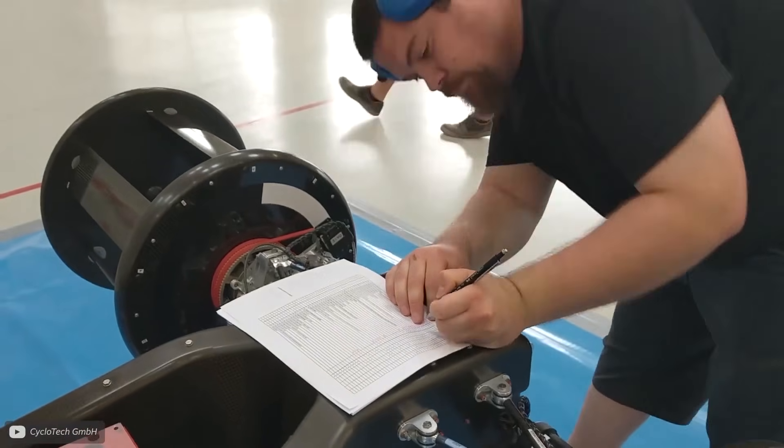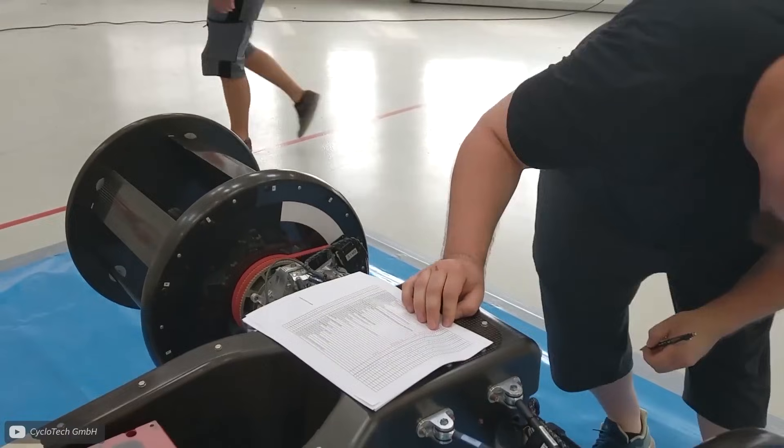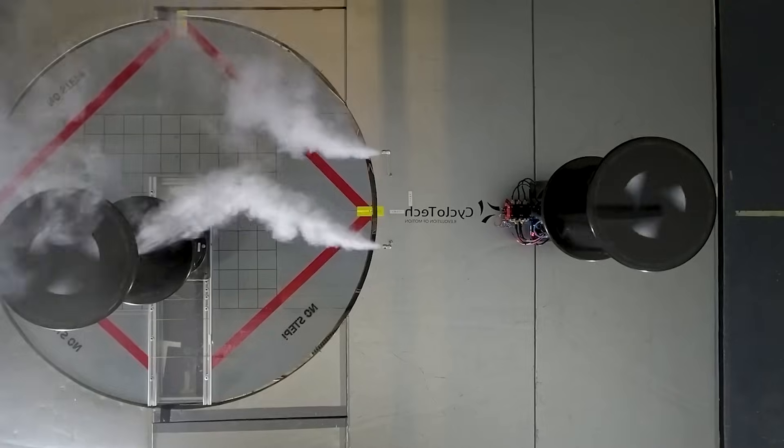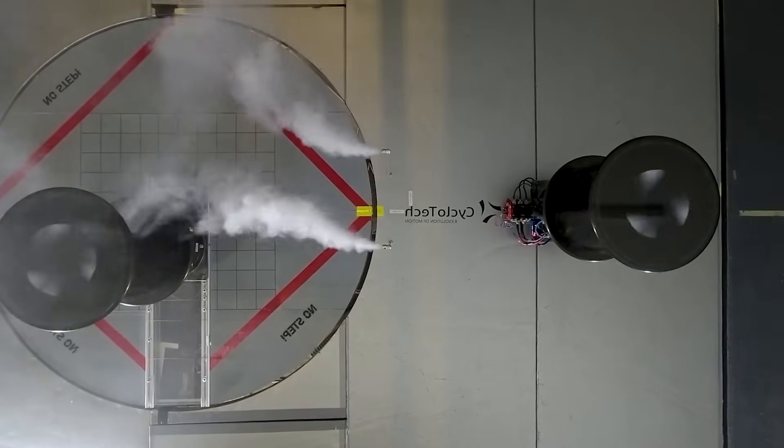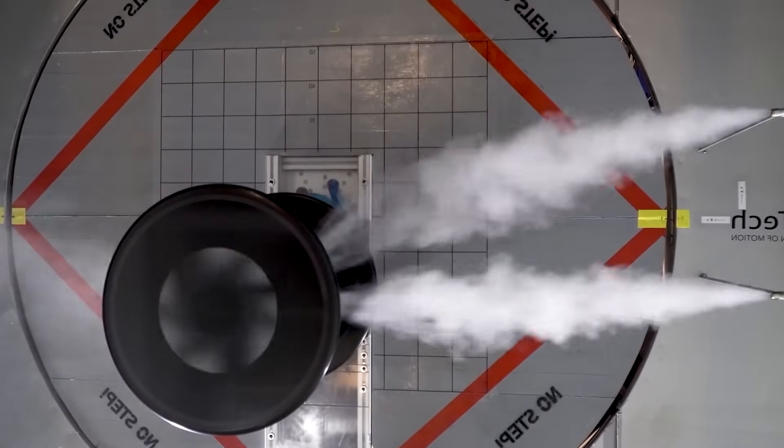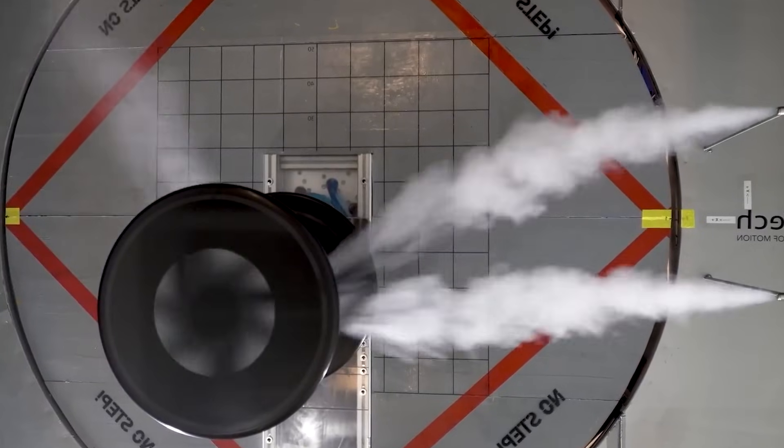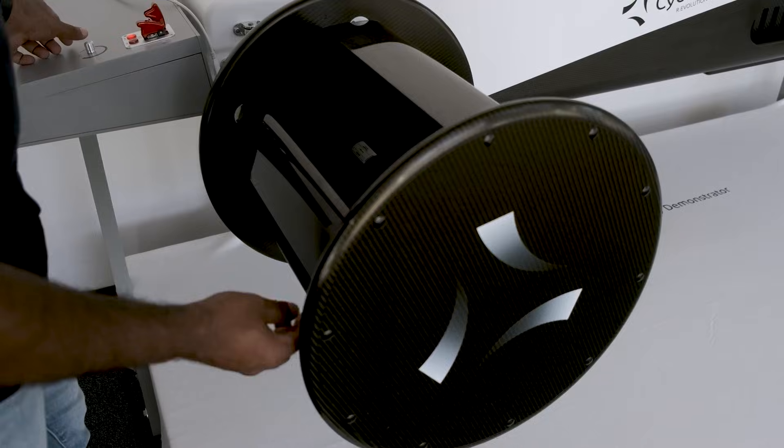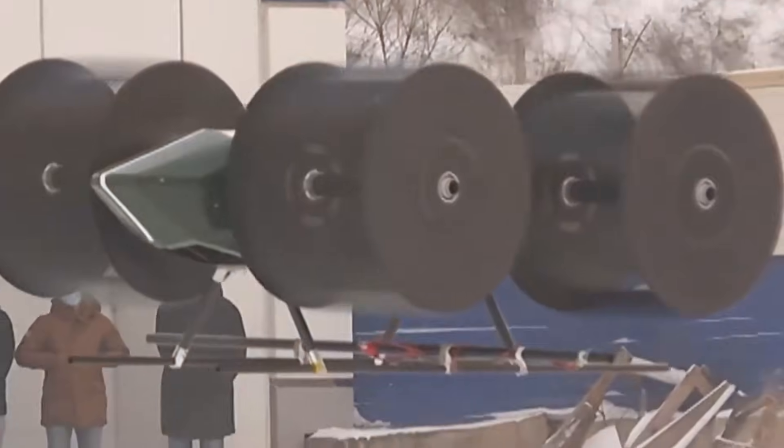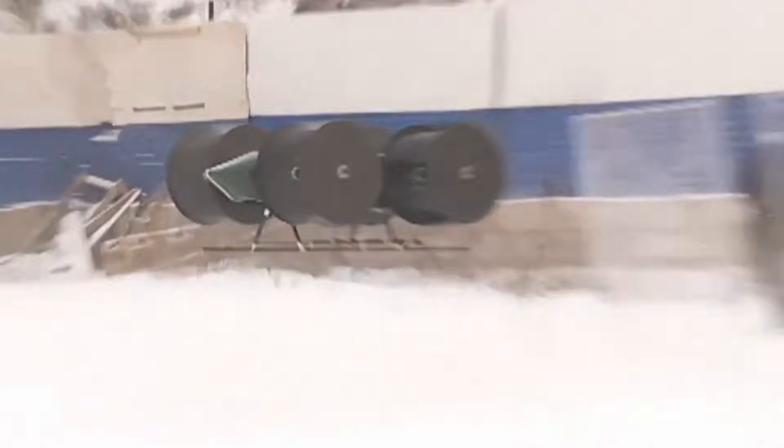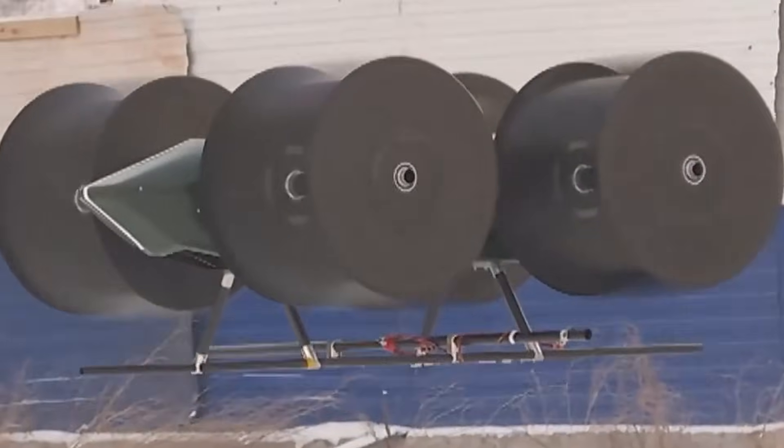If cycloidal propulsion works so well in water, could it be adapted for air? The idea is simple in theory, but complex in execution. A cycloidal propeller consists of multiple aerofoil blades arranged around a rotating drum. As the drum spins, each blade changes its angle of attack depending on its position in the rotation. This coordinated movement allows the system to generate lift or thrust in a single chosen direction. Unlike conventional propellers, where the blade tips move faster than the intersections, all parts of a cyclorotor move at the same speed.